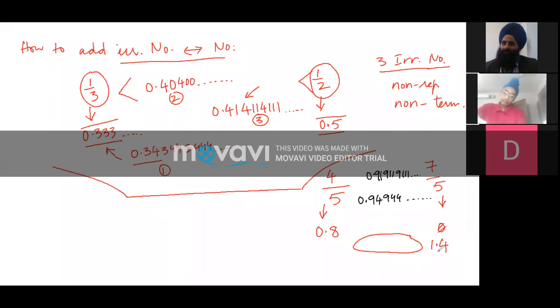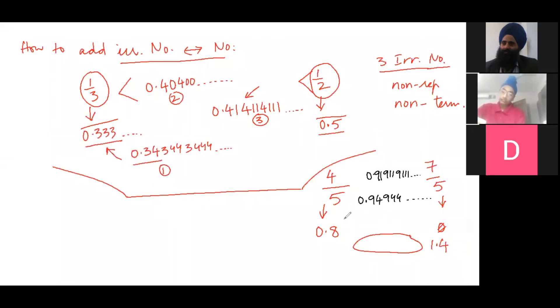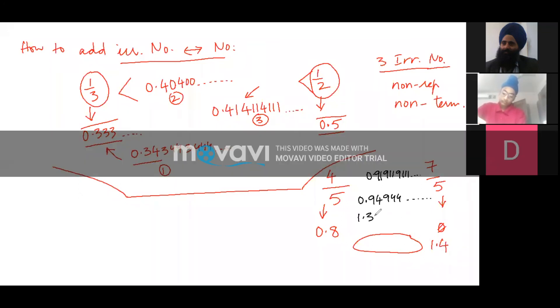Third irrational number, this is 1.3. Anything less than 1.4. This is 1.4, anything less than 1.4, then 1.3, 0, this is less than this and then 3 double 0, and so on. This is the third irrational number.